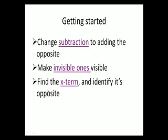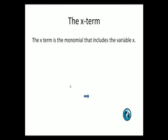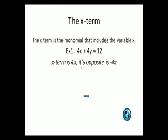And the third thing I want to review is just identifying your x term and finding its opposite. The x term is the monomial that includes the variable x. So in this example, 4x plus 4y equals 12, the x term is 4x. The opposite of 4x is negative 4x. We need to know the opposite in order to finish the process out for isolating y.